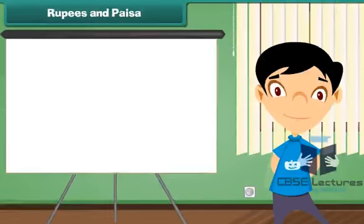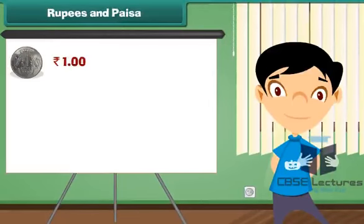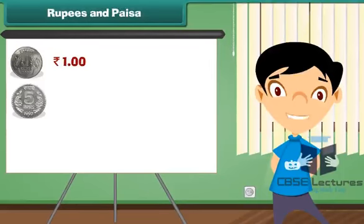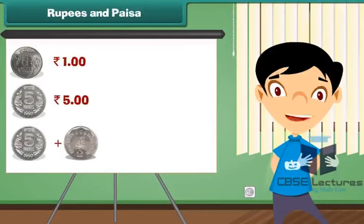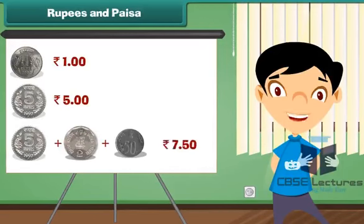1 rupee is written as rupee 1. 5 rupees is written as rupees 5. 7 rupees and 50 paise is written as rupees 7.50.